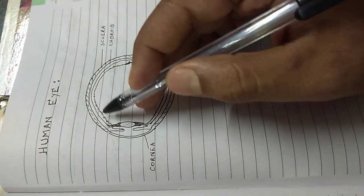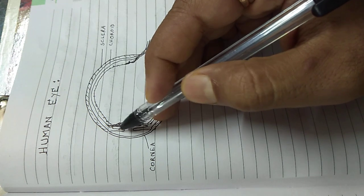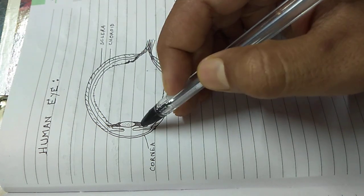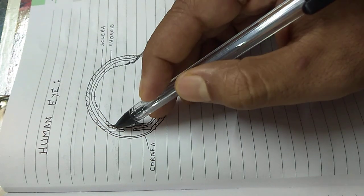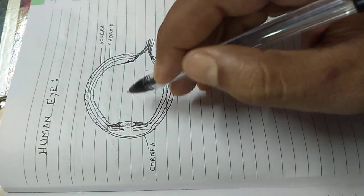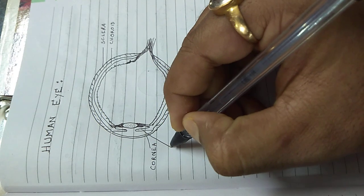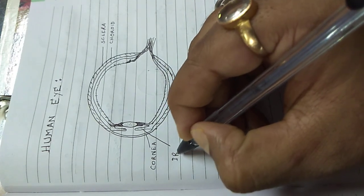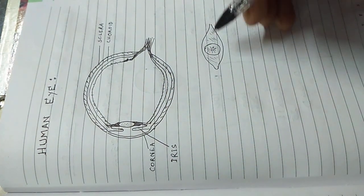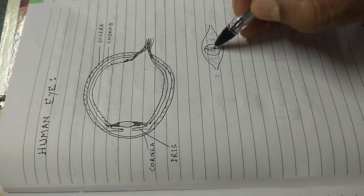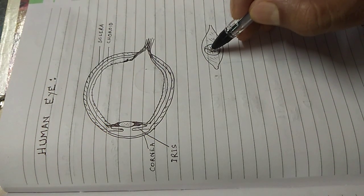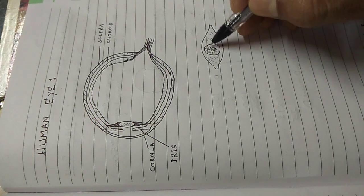This choroid in front forms the muscular partition and this muscular partition gives the characteristic color to your eye and is known as the iris. When we say black color eyes or brown color eyes or green color or blue color eyes, it is the color of this iris layer.